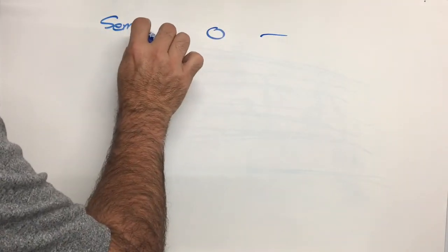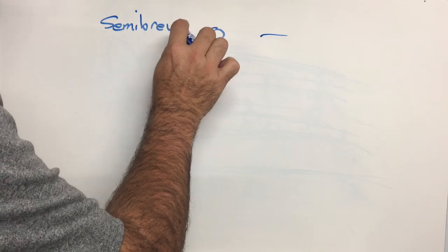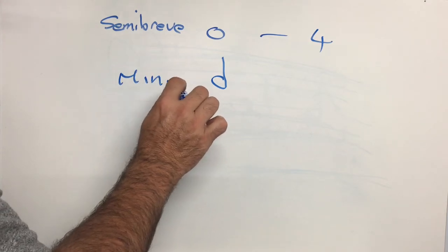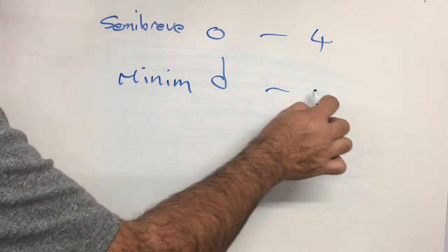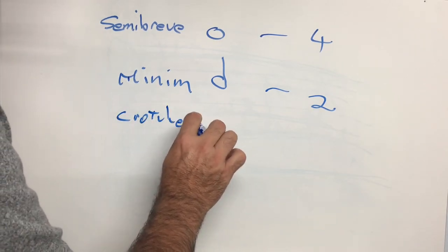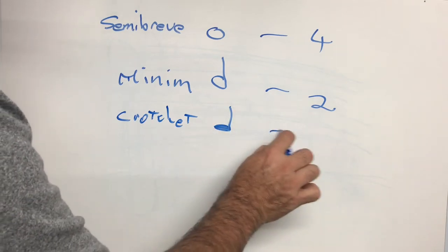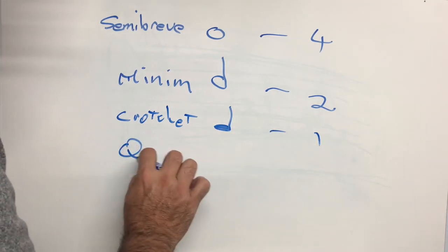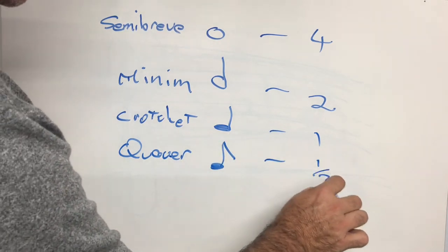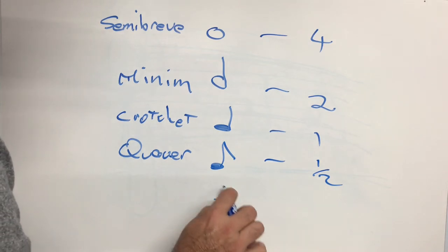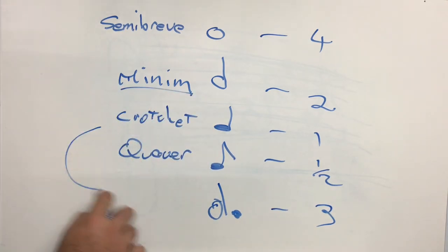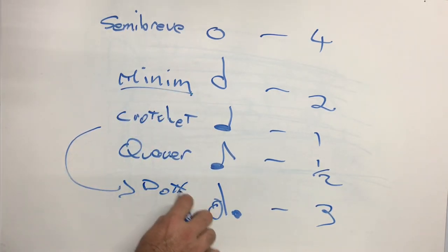It's called a semi-breve and it's worth four counts. Minim and it's worth two. Crotchet. Worth one. Quaver. Looks like a crotchet with a tail. Half a beat. And the very last one is a dotted minim. That's a minim with a dot.